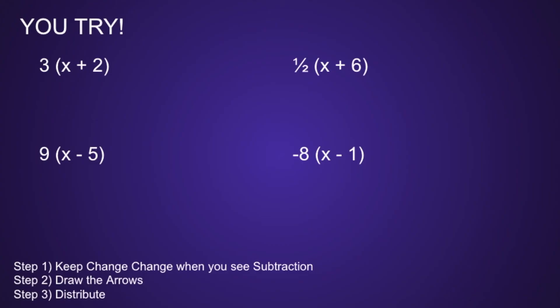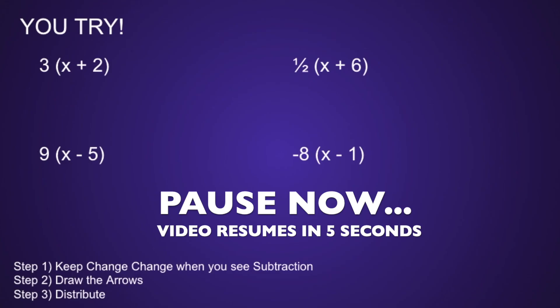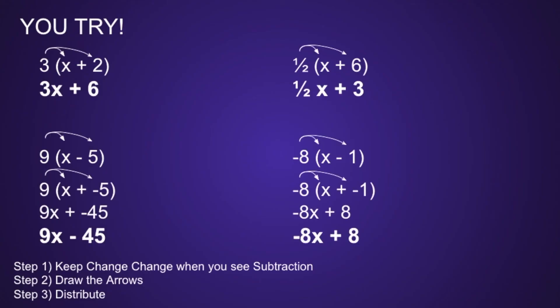Now it is your turn to try. I've got four problems on the screen. I would recommend you pause now, simplify the four expressions using the distributive property, and resume when you're ready to see if your solutions are correct. Let's take a look at those solutions. For the first one, the simplified expression would be 3x plus 6. For the second one, the simplified expression would be 1 half x plus 3. For the third problem, the simplified expression would be 9x minus 45. And for the final problem, the simplified expression would be negative 8x plus 8. Since this is your first time practicing this, it can be tricky. If you did happen to get one of those incorrect, I would take some time to review the steps and see if you can find your mistake. That's the best way to get better at mathematics.